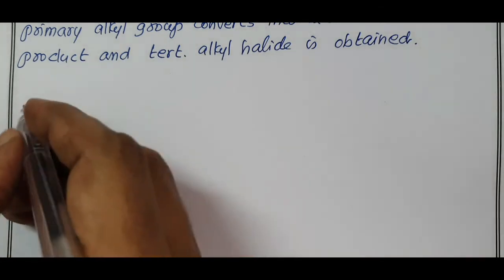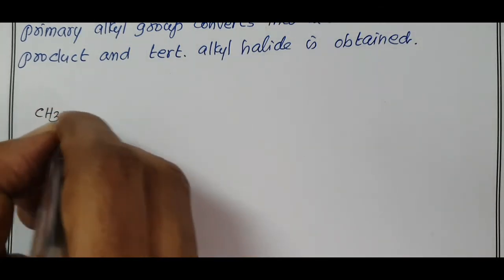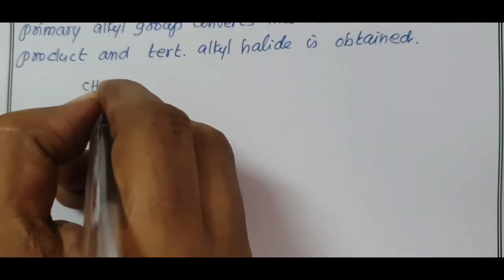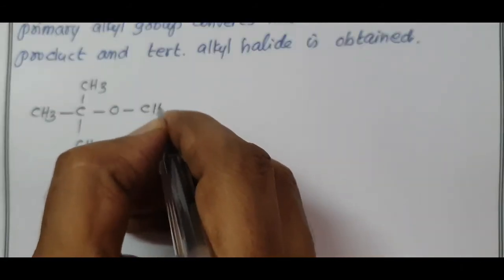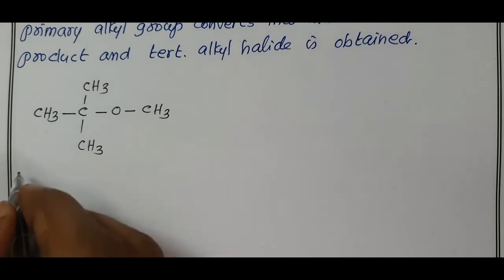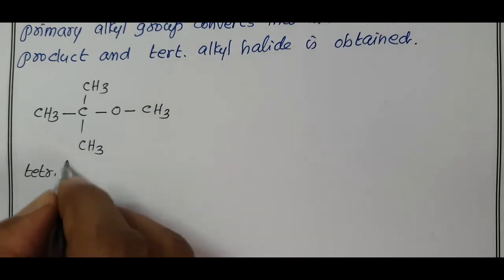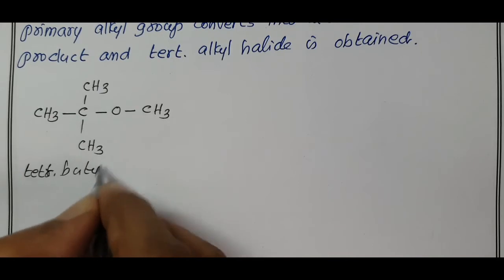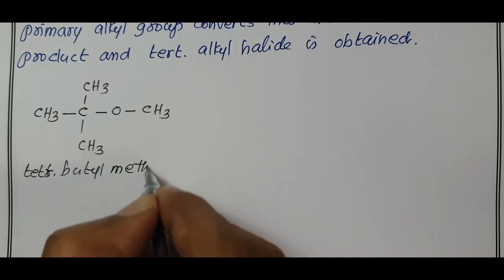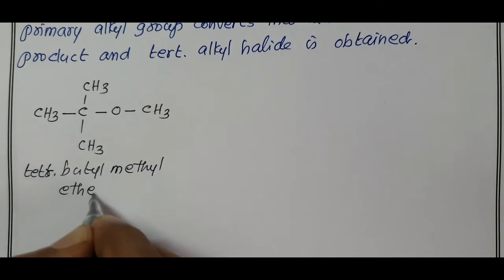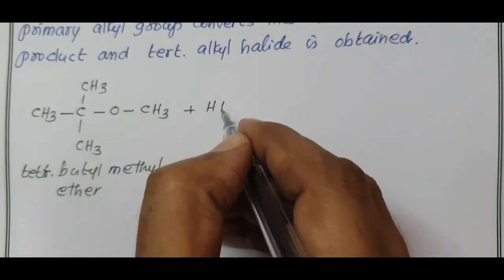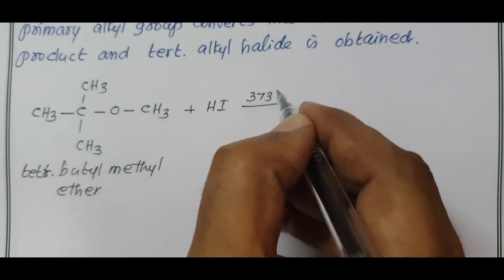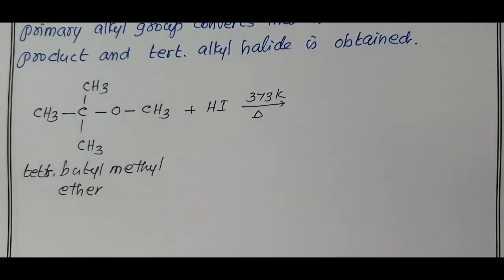The compound given is CH3-C-CH3-CH3, this is your tertiary butyl, O-CH3. What is the name? Tertiary butyl methyl ether. When treated with HI, hydrogen iodide, at 373 Kelvin, H plus, I minus...